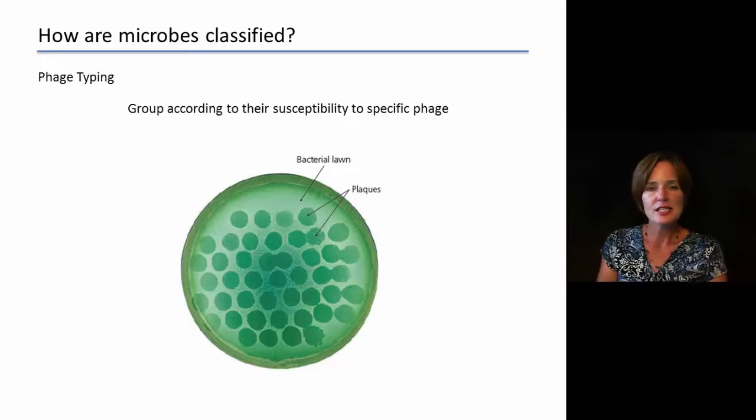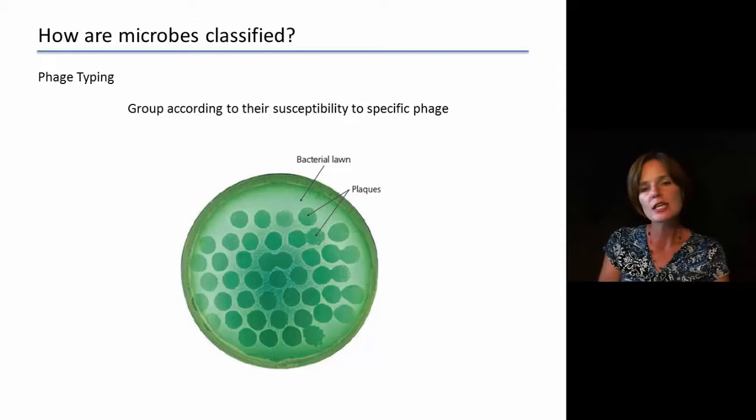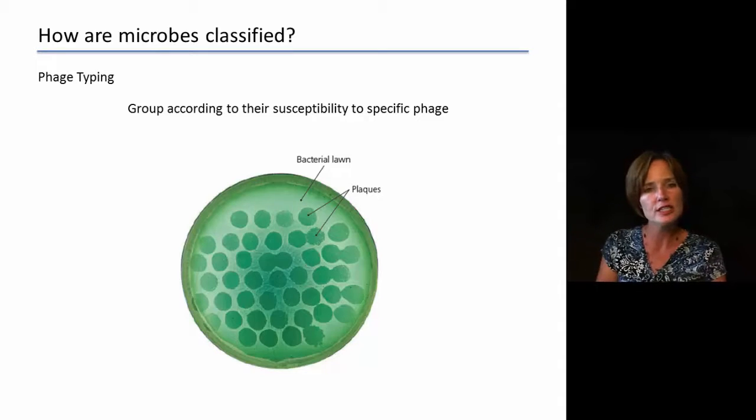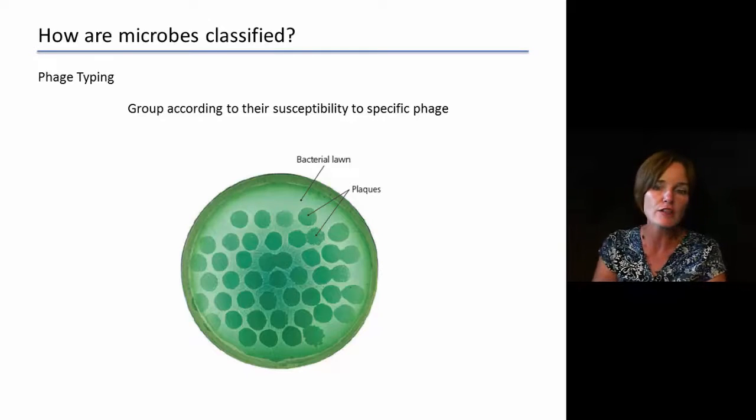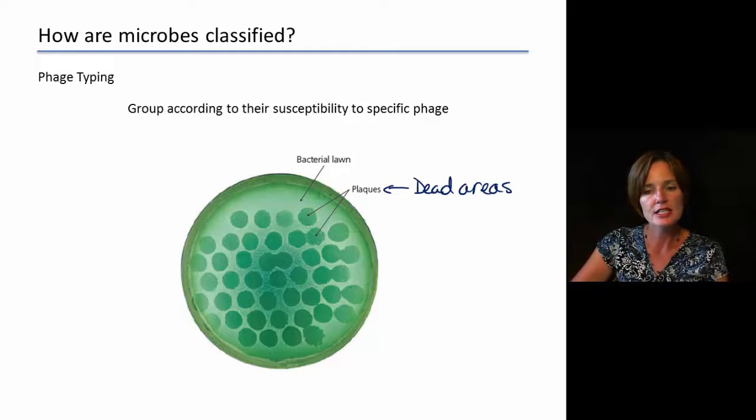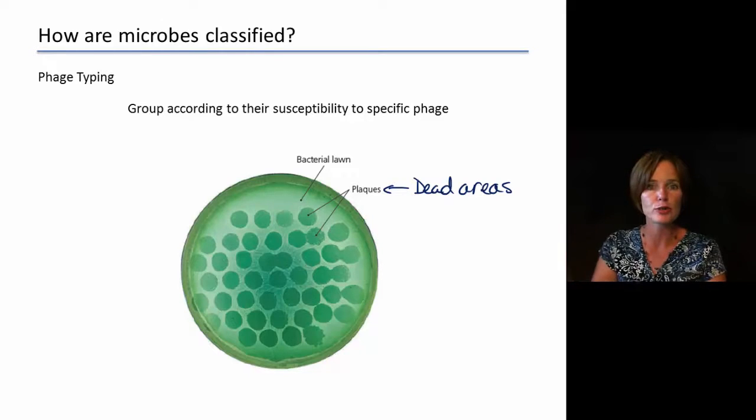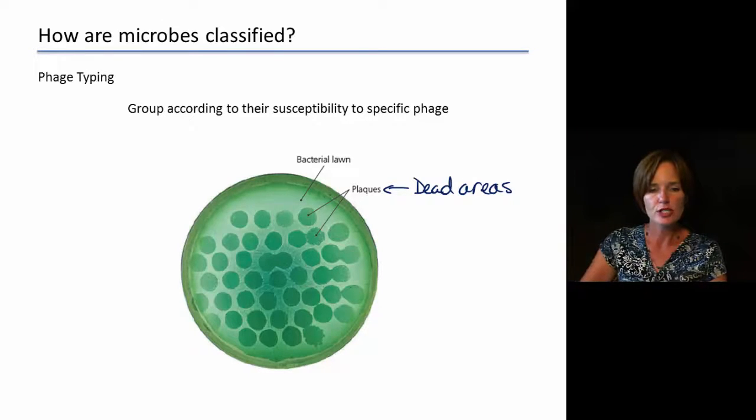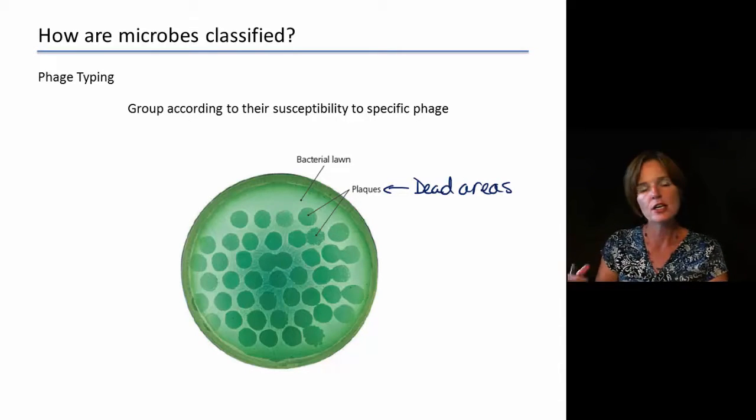The way that we look at this is that the phage, this bacterial virus, is mixed together with some bacteria. And then we spread the sample on a petri plate and we look for growth. And what we see is that if they are susceptible to the phage, then the bacteria in that region of the plate are going to die off. And we do see that as plaques. So plaques are basically dead areas. They would indicate places where the phage was actually able to infect and kill the bacteria. And then the regions where we just see the bacteria itself kind of growing over the surface, those would be places that were not infected by the phage.